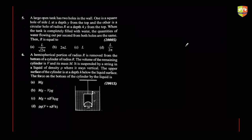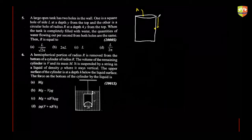What is Torricelli's law? I'll quickly introduce it. If this is the area of cross-section A and the hole is very small and at a depth y, then the velocity of the liquid coming out will be equal to √(2gy), assuming A is very large compared to the small area a. This is Torricelli's law — remember this.